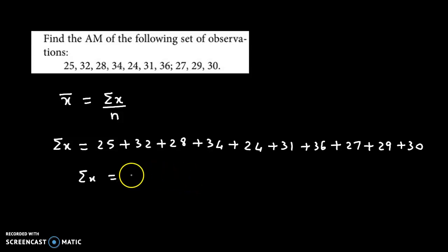The total is 296. Also, the number of observations here, if we count, is 1, 2, 3, 4, 5, 6, 7, 8, 9, 10. That is, n equals 10.